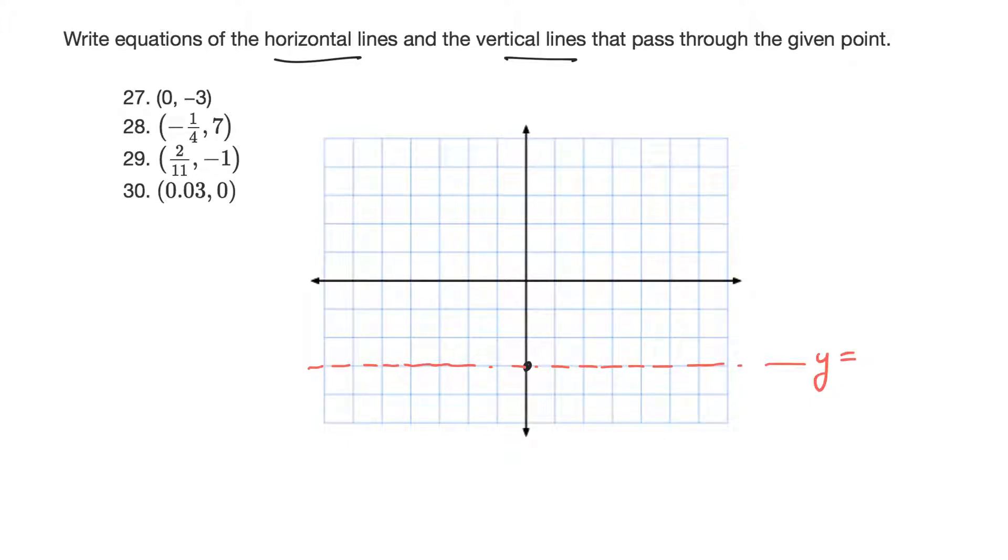And it's always y equal to whatever the height of the thing is or the distance away from the y-axis. So it's 3 down, and so the equation would be y is equal to -3. That would be the equation of the horizontal line for that one.